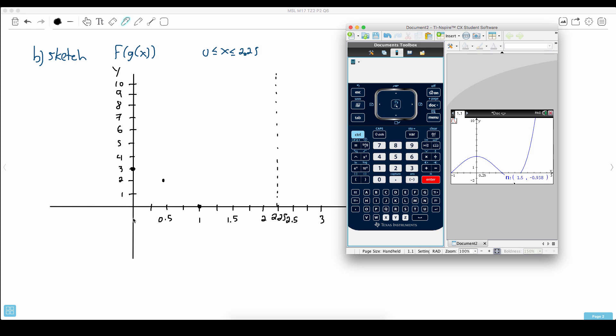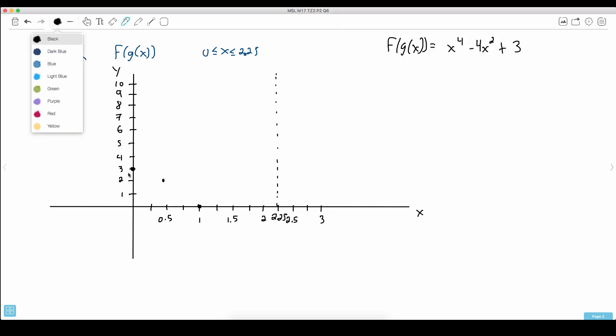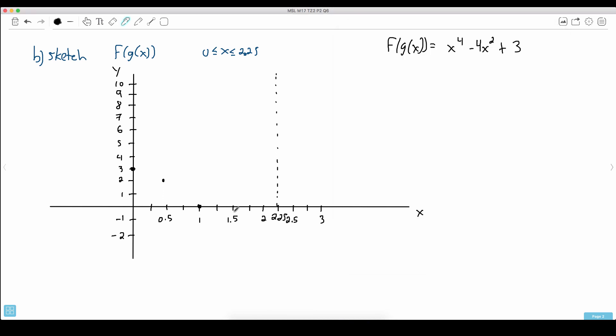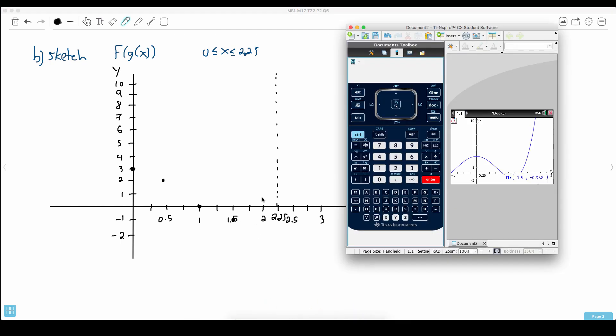Whoops I probably should have drawn more on the axis here shouldn't I? I needed to have a negative 1 and a negative 2 here. So negative what was it again? 0.938. So over here at 1.5 it was minus 0.938. So right around I don't know. Right around there.